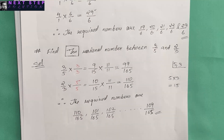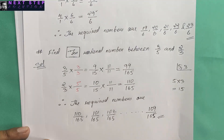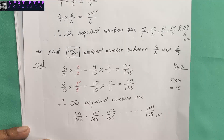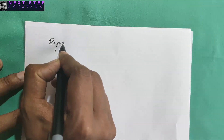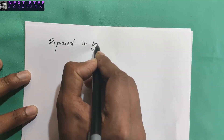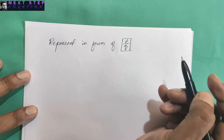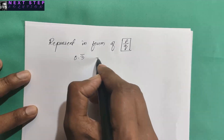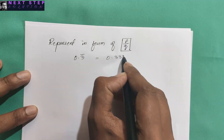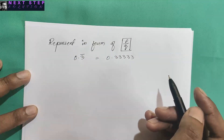The next topic in this chapter is representing a non-terminating repeating decimal in the form of p by q. For example, represent 0.3 bar — which means 0.33333 going on forever — in the form of p by q. Before solving, you should know that multiplying a number by 10 moves the decimal point one digit to the right.